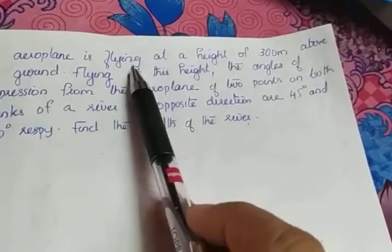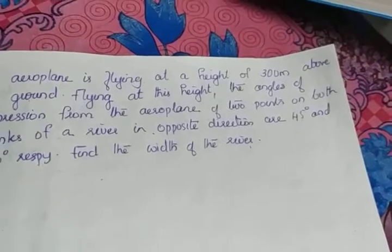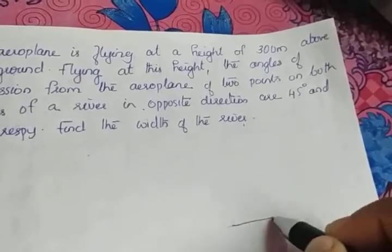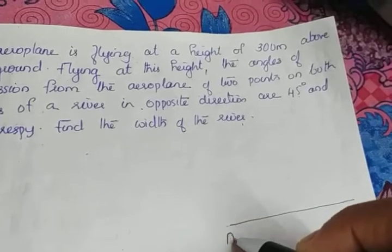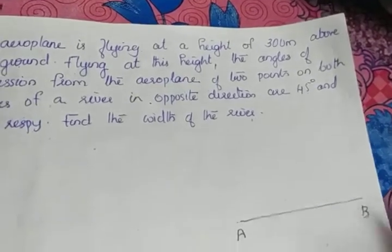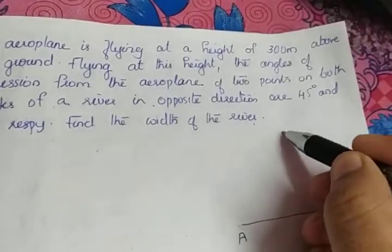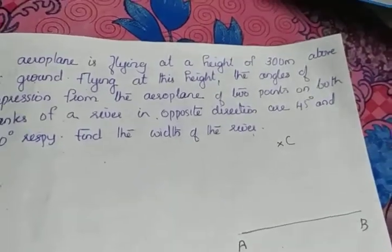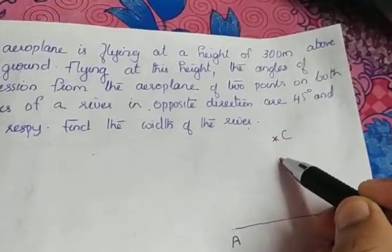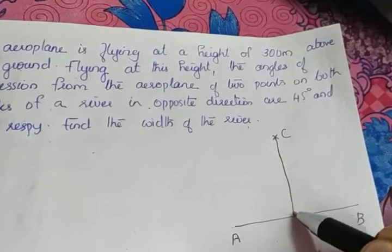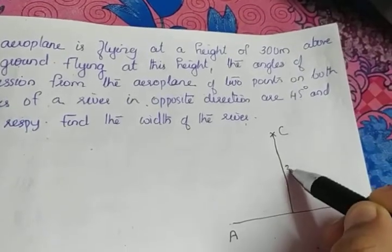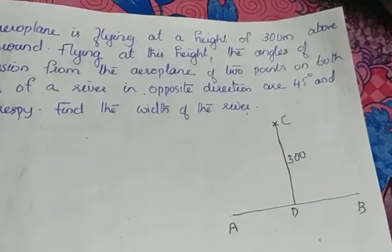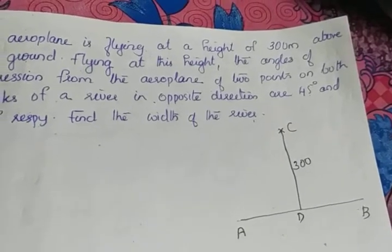The aeroplane is flying at a height of 300 meters above the ground. Let us draw the ground level — let AB be the ground level. Here is the aeroplane; let C be the position of the aeroplane. From the ground level, the aeroplane is at a height of 300 meters. I am marking the foot as D, so the length of CD is given as 300 meters.